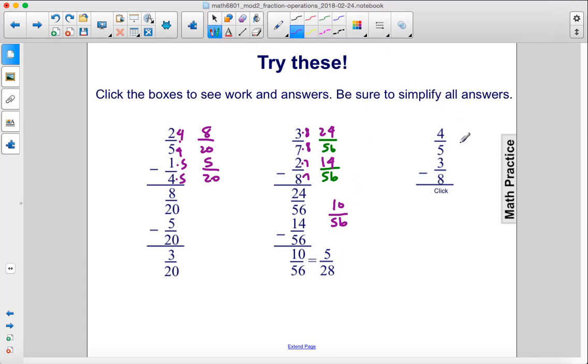Finally, we have 4 fifths minus 3 eighths. We'll do a common denominator of 40, which is 5 times 8. So 5 times 8 gives us 40, 4 times 8 gives us 32. 8 times 5 gave us 40, so 3 times 5 gives us 15. 32 minus 15 gives us 17 over 40.